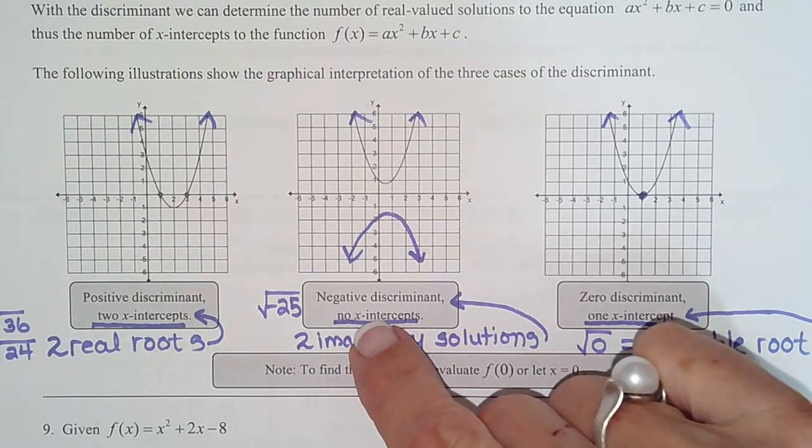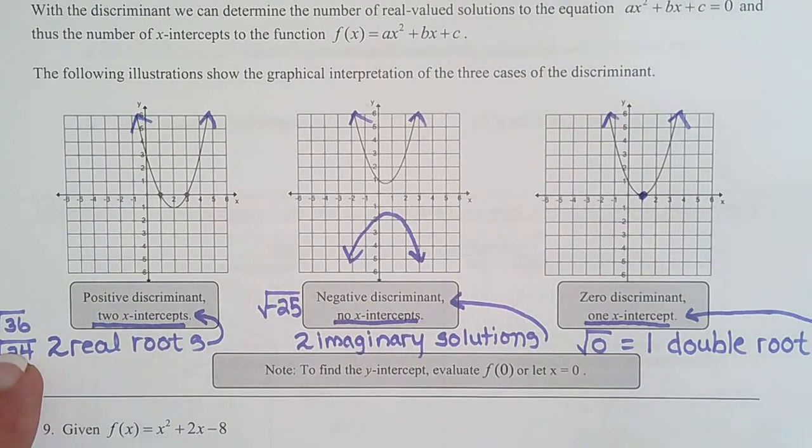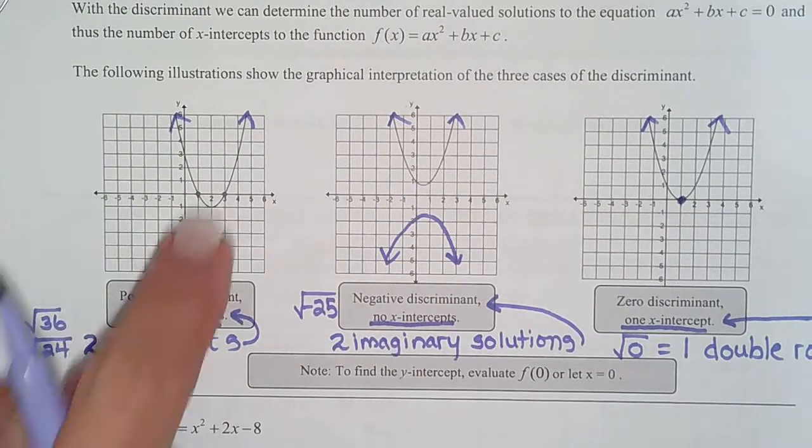So imaginary, no x-intercepts. Positive radical tells us that it will have two x-intercepts.